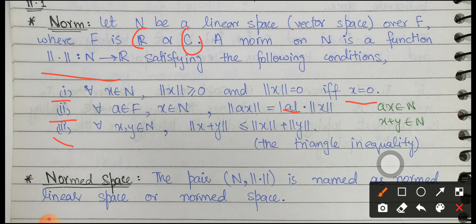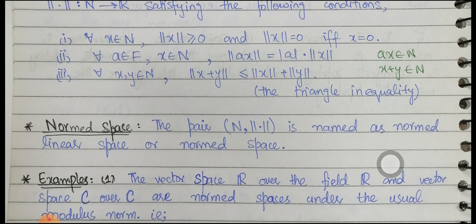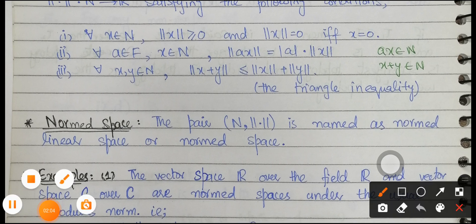The third condition is: for all x, y belonging to N, norm of x + y is less than or equal to norm of x plus norm of y, which is the triangle inequality. These three conditions must be fulfilled. If a function satisfies them, we call it a norm function — similar to how we define metric spaces. The pair (N, ‖·‖) is called a normed space or normed linear space.